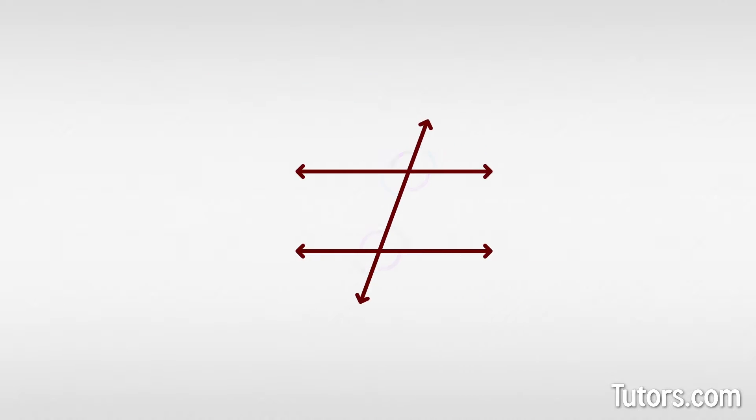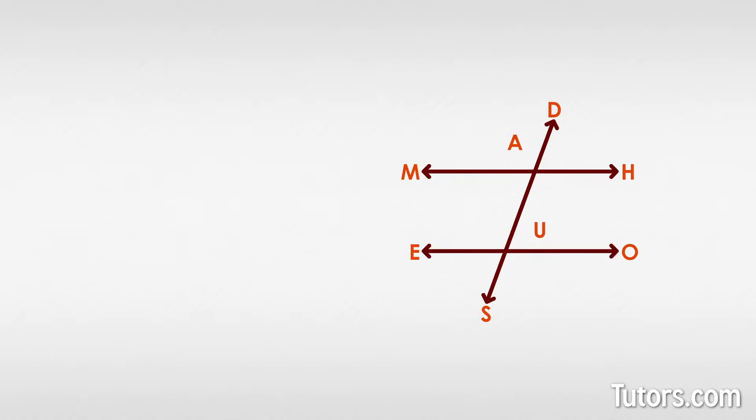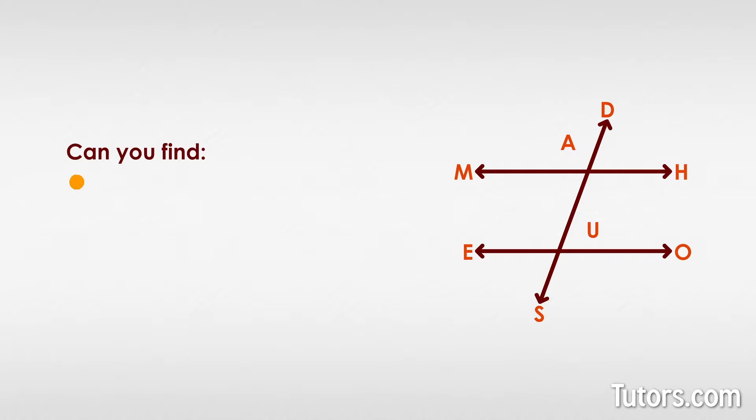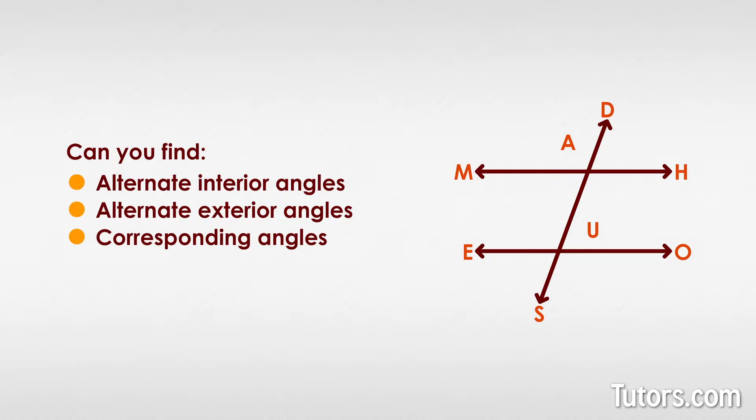Here is a transversal S-D cutting across parallel lines M-H and E-O at points A and point U. Yes, it is a madhouse, but can you find the alternate interior angles, alternate exterior angles, and corresponding angles?